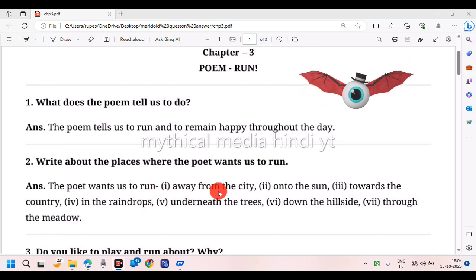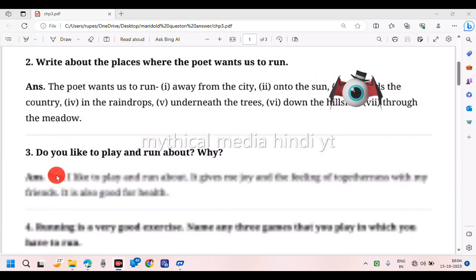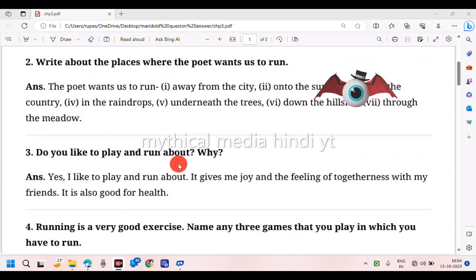The poet wants us to run away from the city, onto the sun, towards the country, in the raindrops, underneath the trees, down the hillside, through the meadow. Question three: Do you like to play and run about? Why?